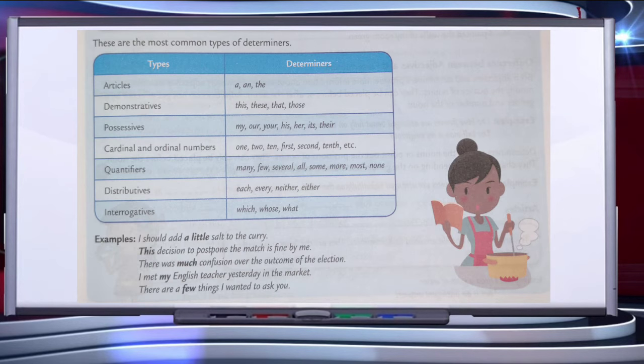Determiners are the words used before nouns to indicate which nouns are being referred to. They are either specific or general in meaning. This table is showing the most common types of determiners.